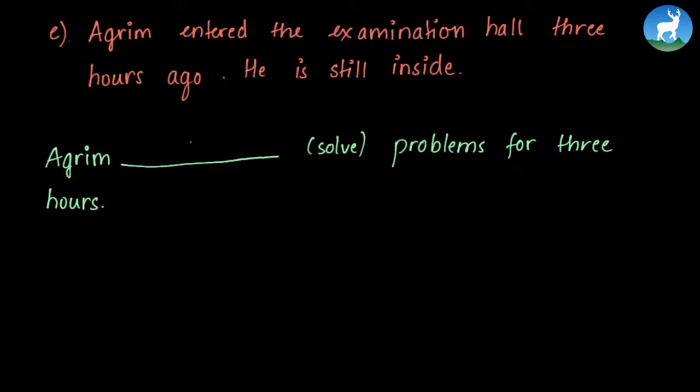And the last question is, Aqrim entered the examination hall three hours ago. He is still inside. Now this is similar to the first two questions that we solved. The event that Aqrim has entered the examination hall happened in past, but that's still affecting the present because he is still inside. So we can say Aqrim has been solving the problems for three hours.